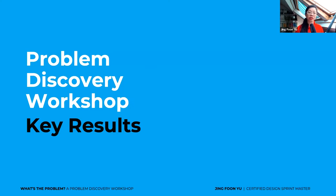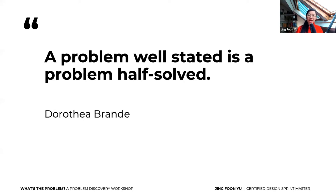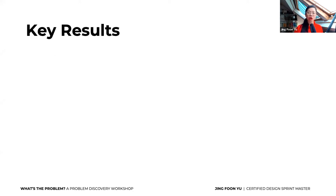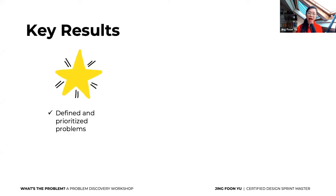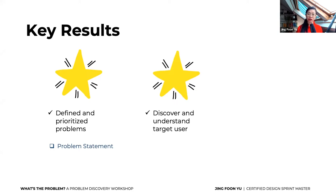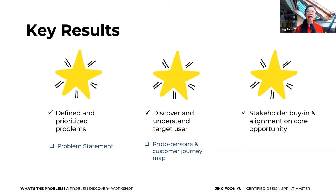What are the key results you'll take away from a problem discovery workshop? As the saying goes: a problem well stated is a problem half solved — it gives you real direction. Key results include: defined and prioritized problems from writing the problem statement together; discovering and understanding target users via the proto persona and a customer journey map; stakeholder buy-in and alignment on the core opportunity. All of that comes together in a design sprint brief.